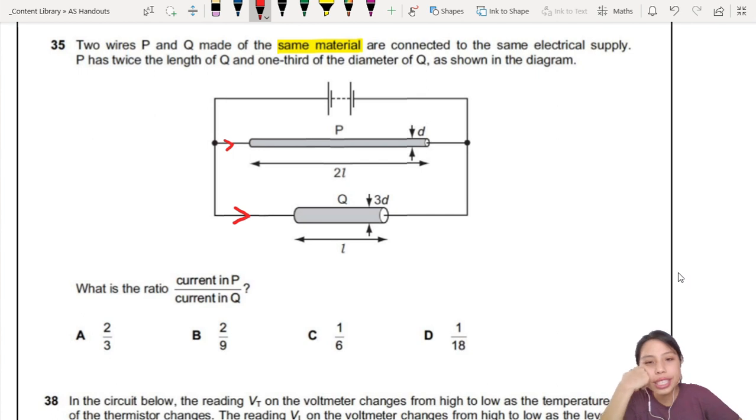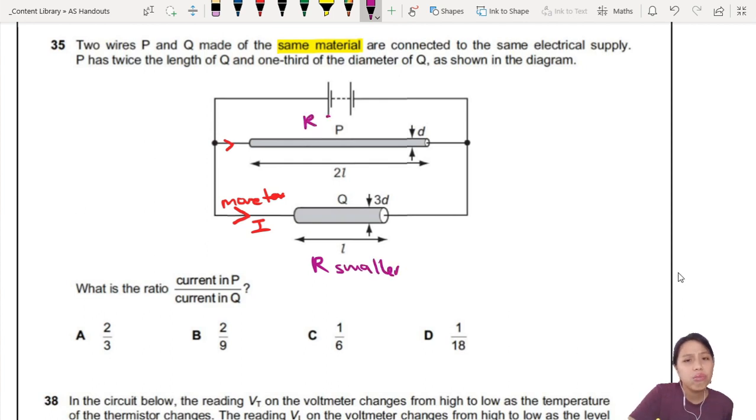Just by looking at the picture alone, which one you think will have more current? See the short shot, the fat fat one? This one will have more current flowing through it. Because probably more lower, more high. Because the resistance is likely smaller here. So I'm just going to write here smaller. Miss, can you look at picture and guess like that one? Can? Why not?